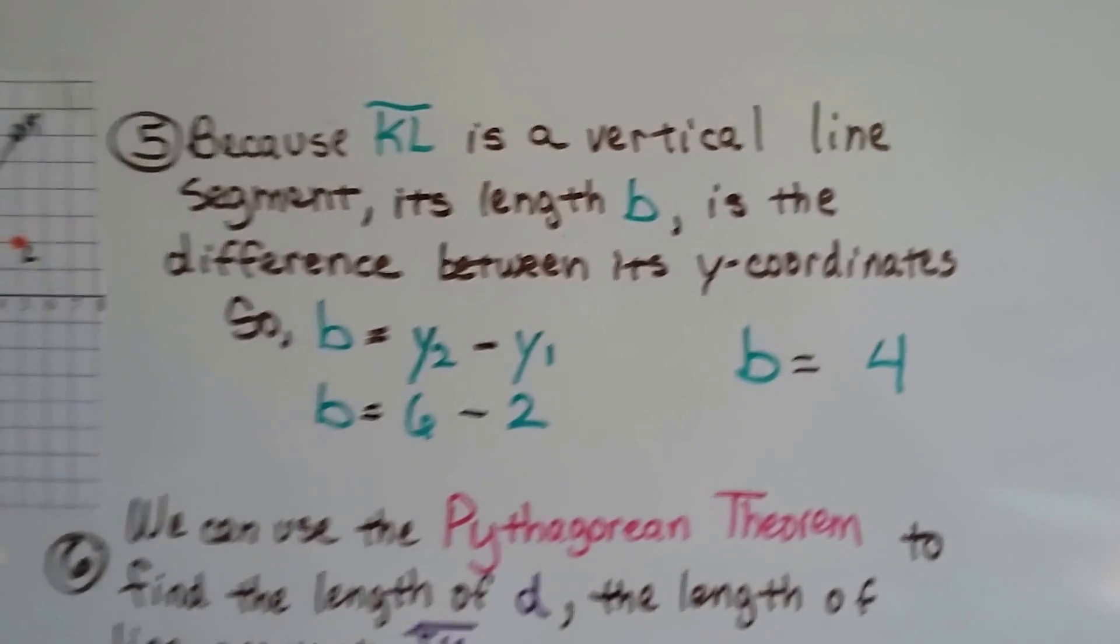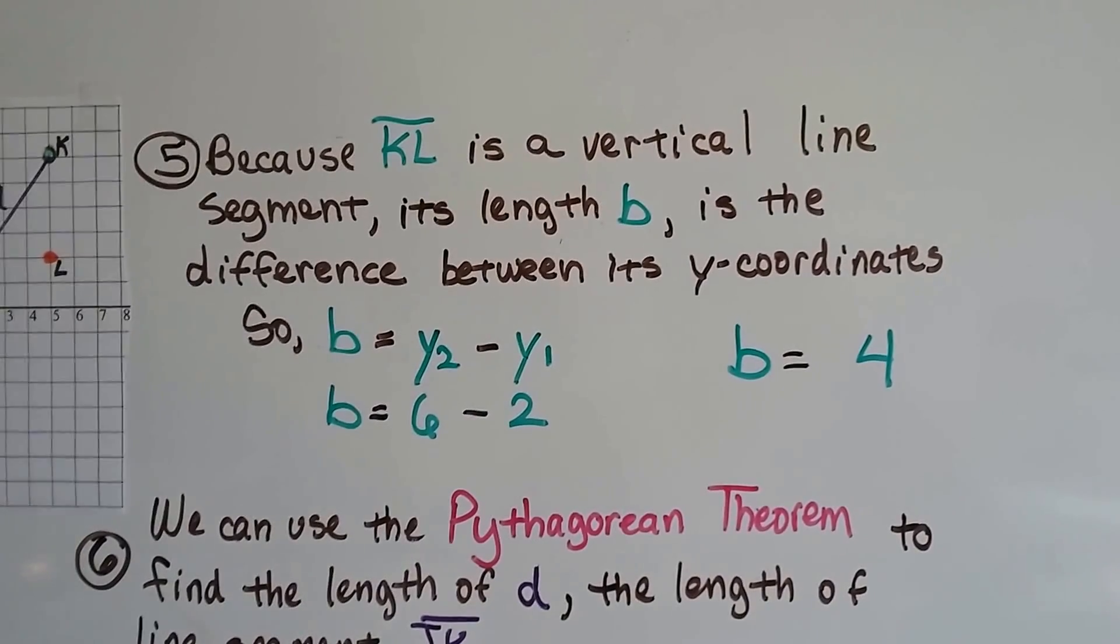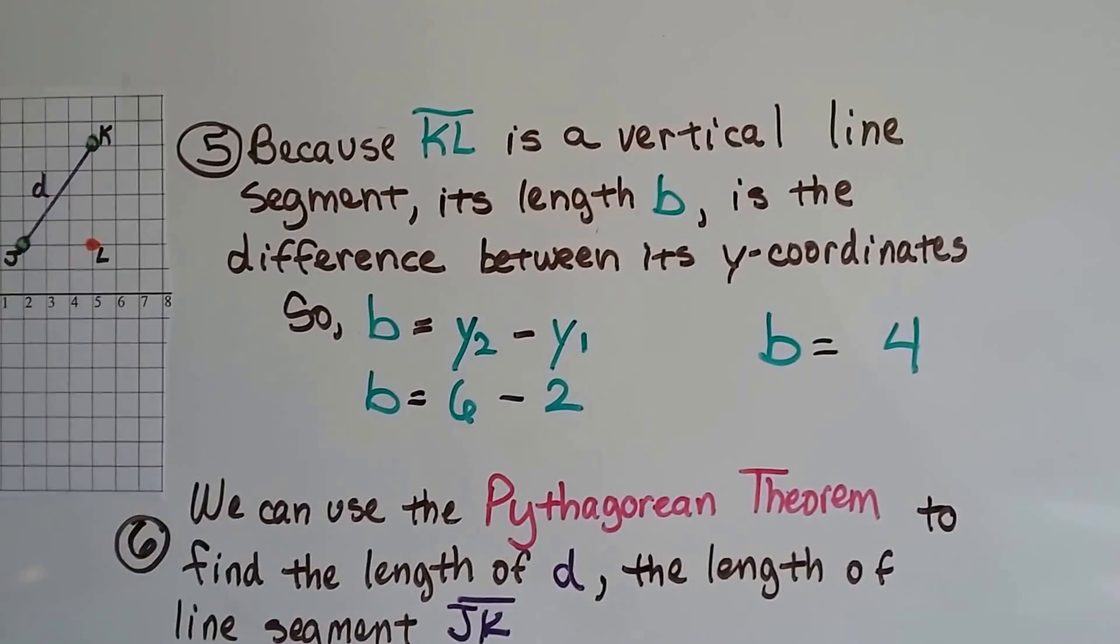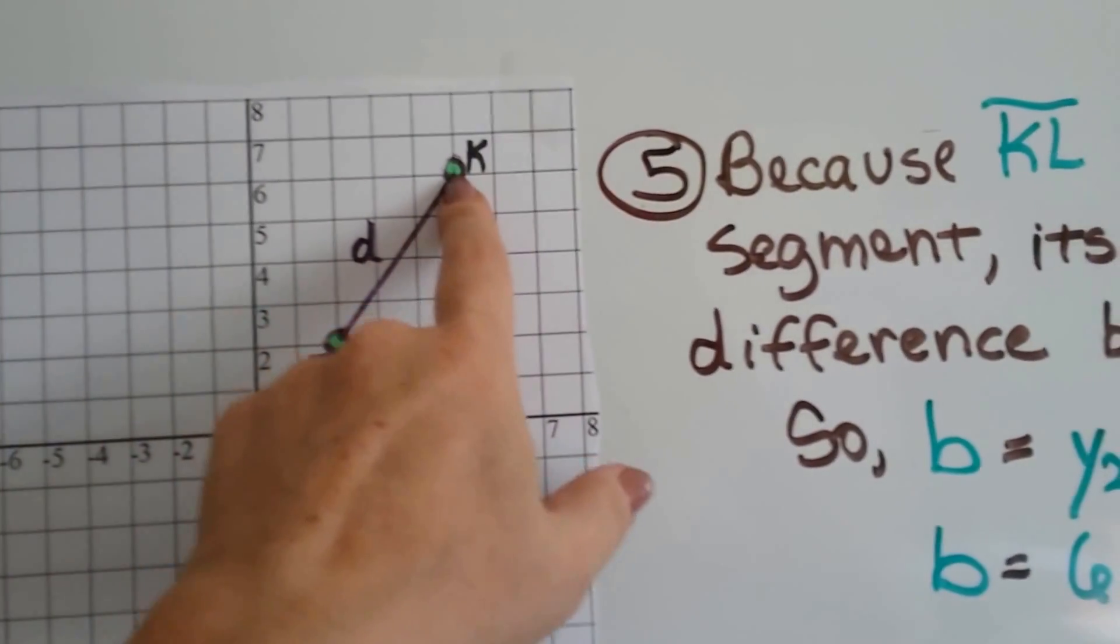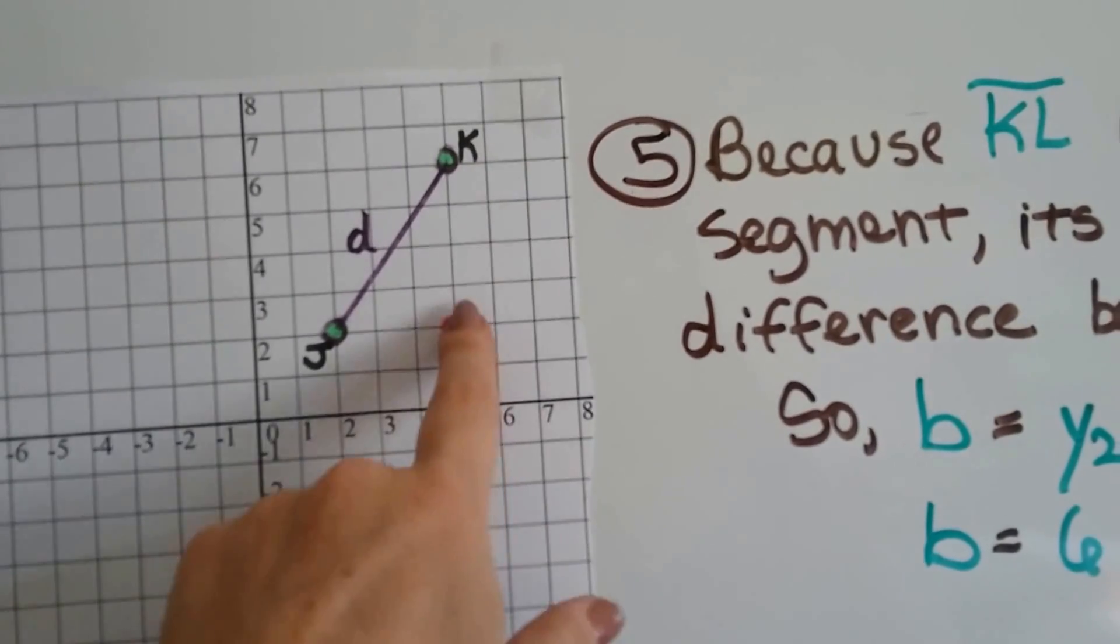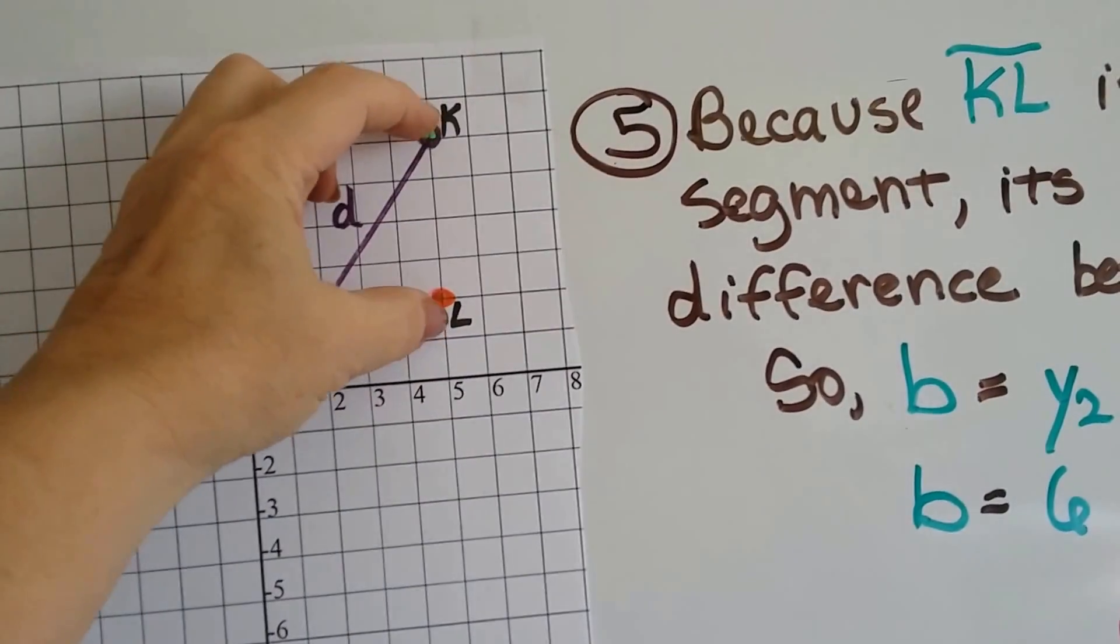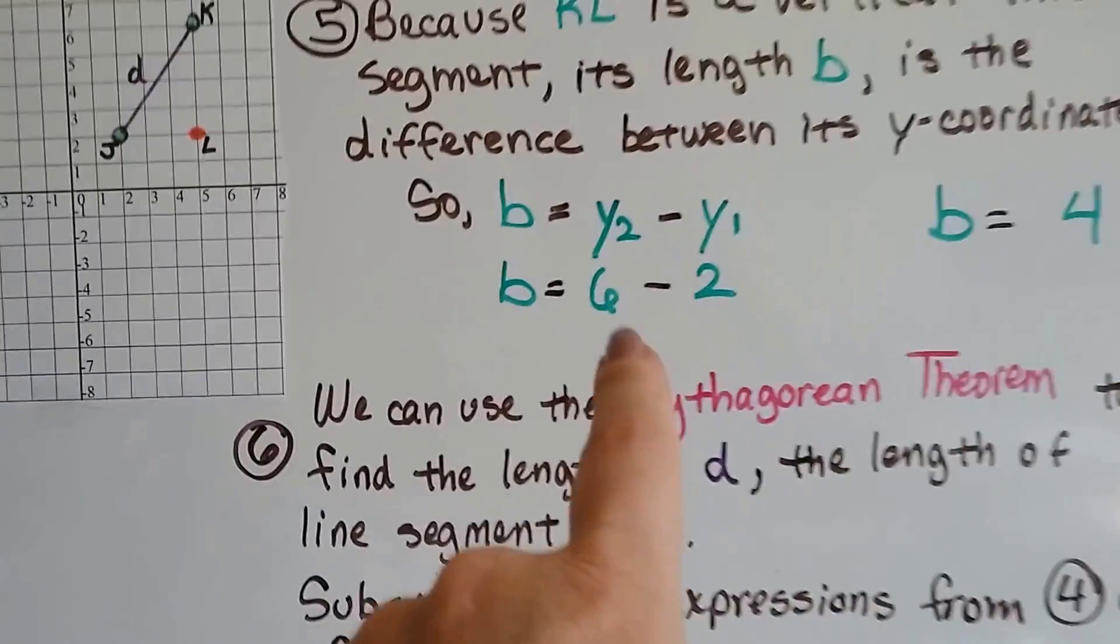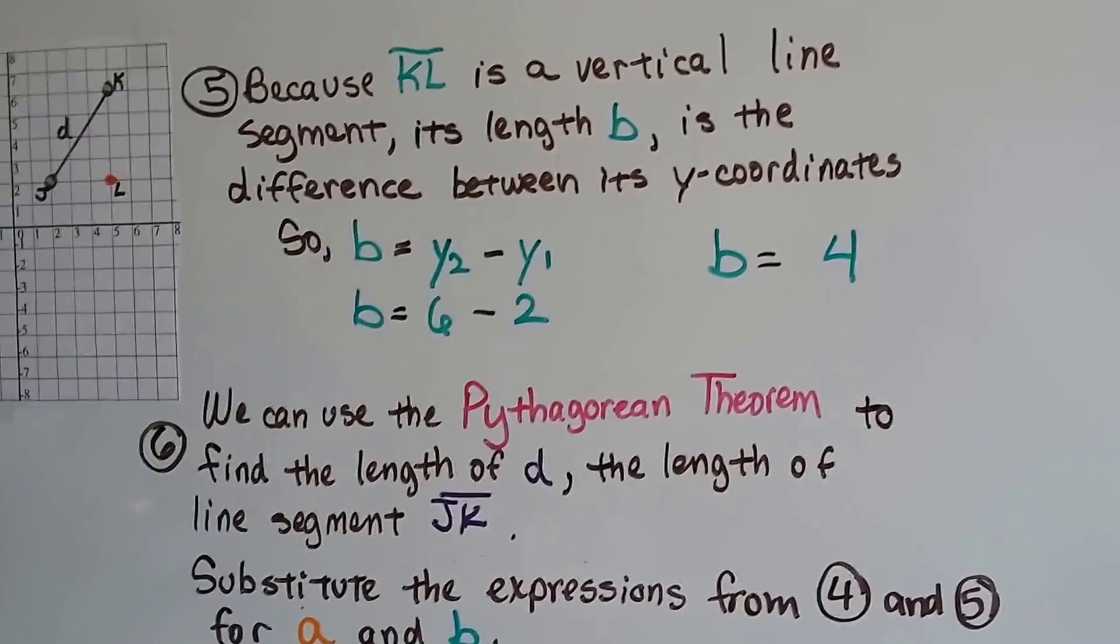Now, because kl is the vertical line segment, its length b is the difference between the y-coordinates. The horizontal one was the difference between the x-coordinates. The vertical one is going to be the difference between the y-coordinates. So what are the y-coordinates? Well, we've got a 6 right here, and for this point, it would be a 2. See that? So for this line segment right here, we're at a 6 and a 2. So y2 is 6, y1 is 2, 6 take away 2 is 4. We know the length of b is 4.